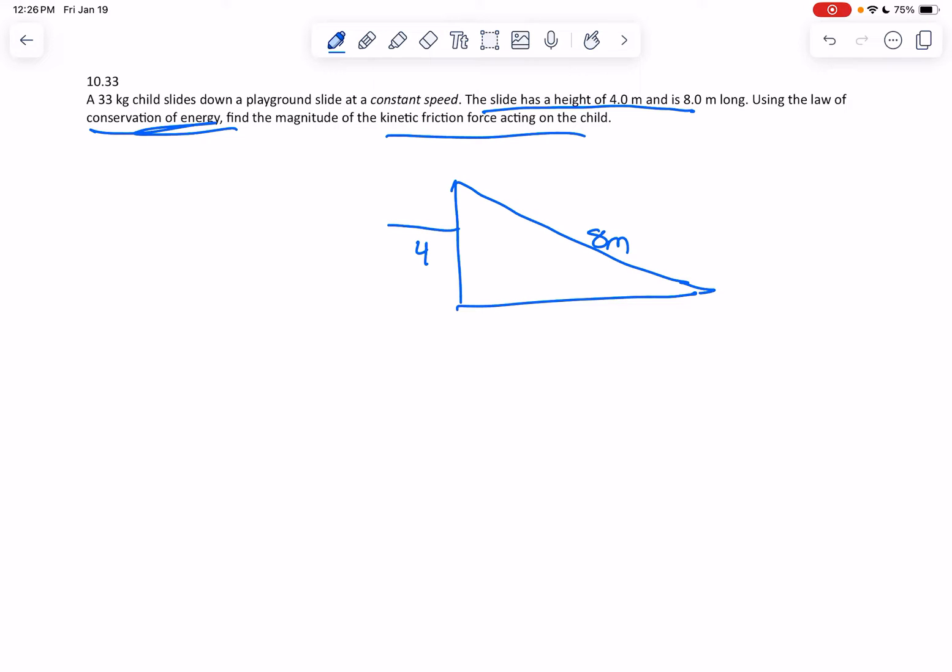Well, energy-wise, this is MGH. So we know the mass of the kid is 33 kilograms, and we know the height in meters, so we can find the energy at this point, the kid at the top of the slide.